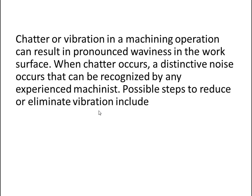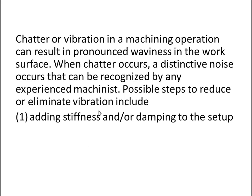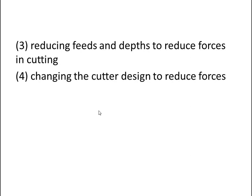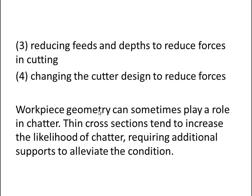Chatter or vibration in the machining operation can result in pronounced waviness in the work surface. When chatter occurs, a distinctive noise is produced that can be recognized by any experienced machinist. Possible steps to reduce or eliminate vibration include: 1) adding stiffness and/or damping to the setup; 2) operating at speeds that do not cause cyclical forces whose frequency approaches the natural frequency of the machine tool system; 3) reducing feeds and depths of cut to reduce cutting forces; 4) changing the cutter design to reduce forces. Workpiece geometry can sometimes also play a role in chatter — thin cross sections tend to increase the likelihood of chatter, requiring additional supports to alleviate the condition.